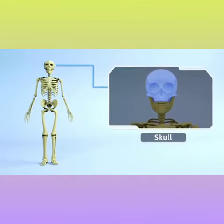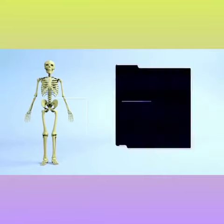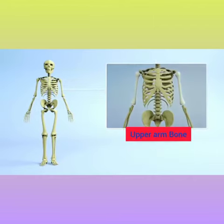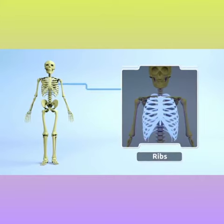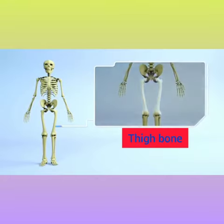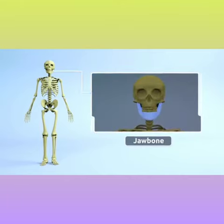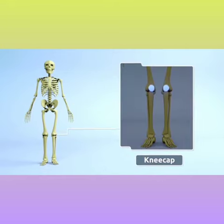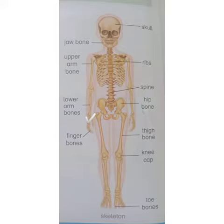Number 1 is Skull. Number 2 is Spinal Cord. Number 3 is Upper Arm Bone. This is a rib cage in which delicate organs are present. Number 2 is Femur Bone or Thigh Bone. This is a Jaw Bone. This is Vertebra or Spine. And then Lower Arm Bone. And this is a Knee Cap present on knees. And Thigh Bone and Toes Bone. This is your Finger Bones.